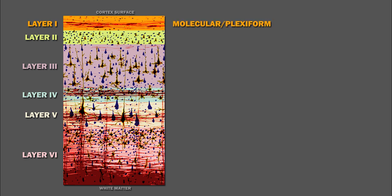Layer 1 is called the molecular, or plexiform layer, and has few neurons. Neurons that are found here include rosehip neurons, some spiny stellate cells, and cajal retzius cells. Other cells include subpial granular layer cells and glial cells. This layer is mostly made up of transverse fibers, extensions of the dendrites of pyramidal neurons.